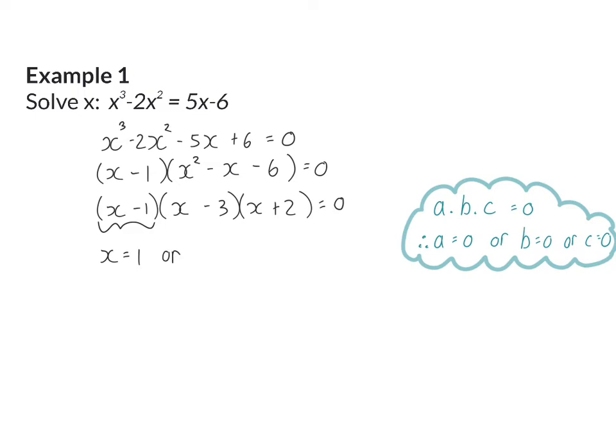Or for our second factor, x should be 3. And for our third factor, our option is to make x equal to minus 2. Any cubic equation will always have at most three real solutions, and here we found three.